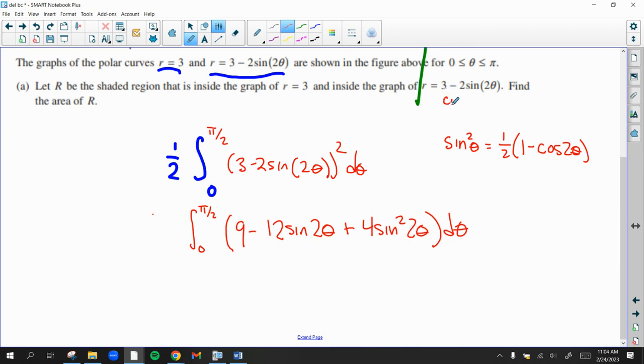If it were a cosine squared, its power reducing formula is 1 half times 1 plus cosine 2 theta. But we have sine squared, so we're going to use this. So let's apply that right now.